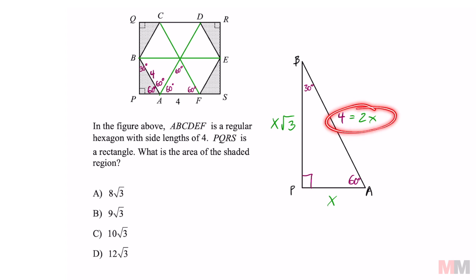This information right here gets me what X equals because all you have to do is divide by 2. So X is going to equal 2, and now we can substitute the value of X to this expression. So the length of BP is going to be 2 root 3.